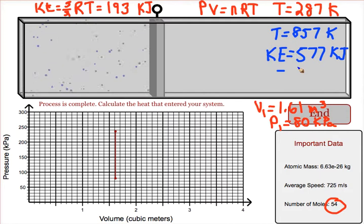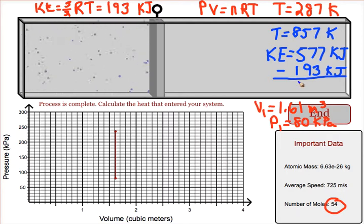So we take that, subtract off the original kinetic energy, and that will tell us how much the kinetic energy has changed by, and that will be equal to the heat that has been added to our system. That will come out to be 384 kilojoules.